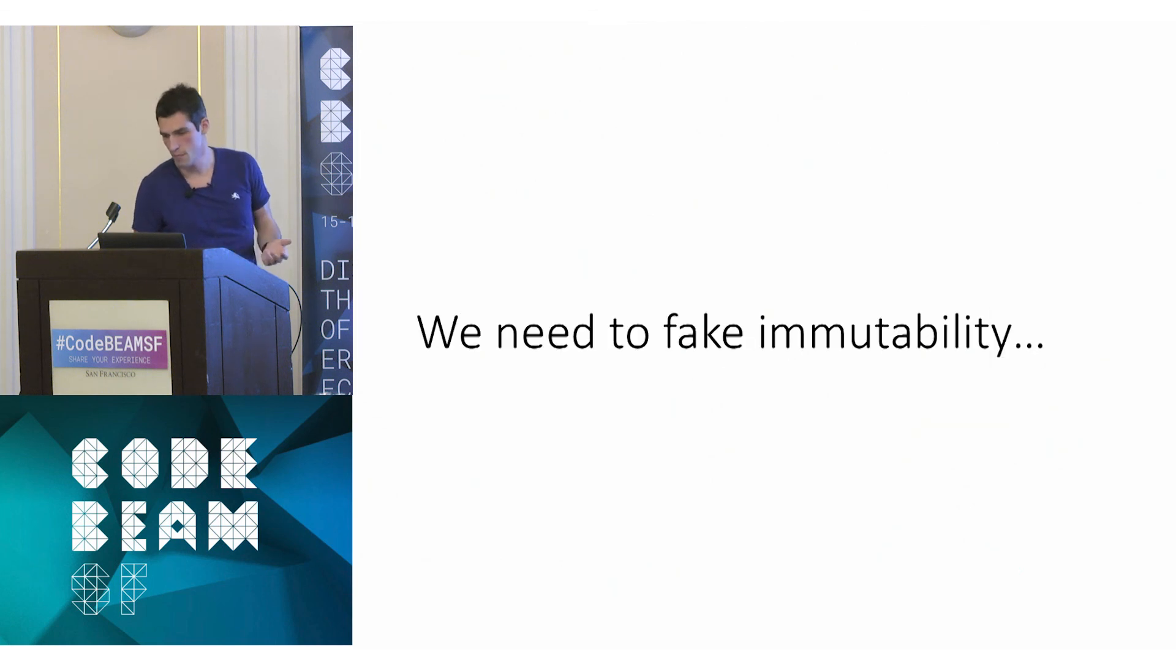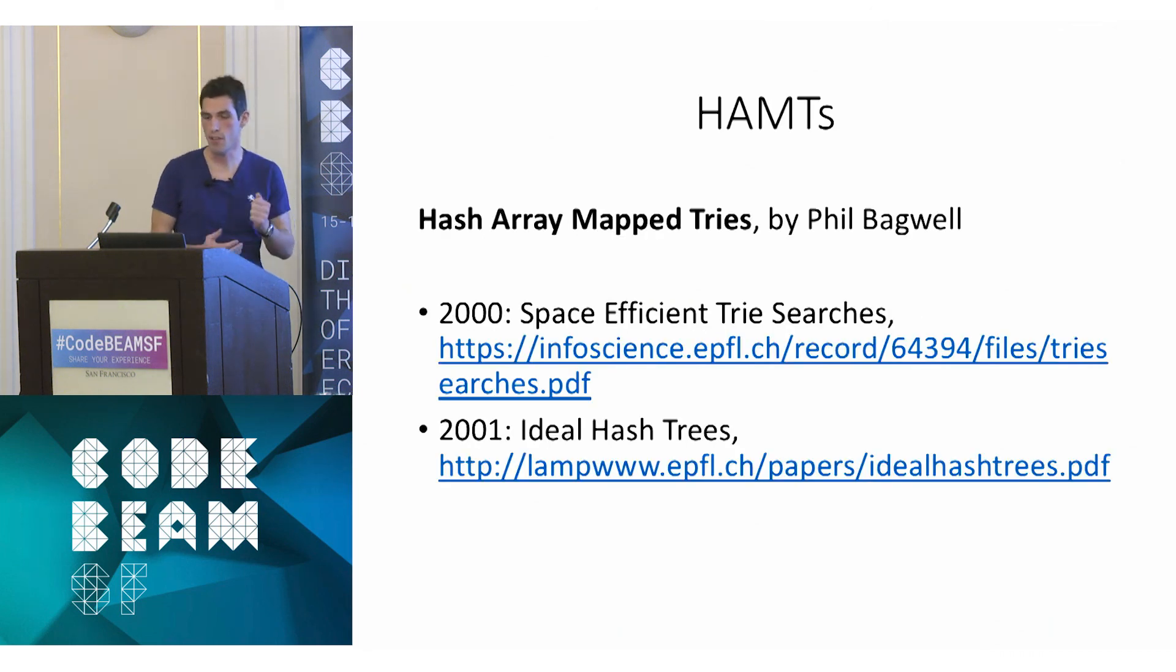And so the problem here is really to have a data structure that supports what we want, so the four operations that we want in constant time, and at the same time gives the Erlang developer the illusion that everything is immutable. And to do that, to fake immutability, the Erlang core developers used this data structure called HAMTs. So HAMTs were designed by a researcher named Phil Bagwell, who was a researcher at the Federal University in Lausanne, Switzerland. And he described HAMTs in two pretty important landmark research papers that you can go read at these URLs. And as you can see, it's not super recent, but it's fairly recent compared to when other languages got maps. So yeah, it would have been hard before that to give maps to Erlang, or we would have to use something else.